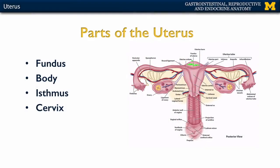The majority of the uterus is referred to as the body — all of this right here is considered the uterine body. The isthmus, similar to what we had with the uterine tube, is this pinched-in area or the narrowing portion of the uterus that leads into the cervix.